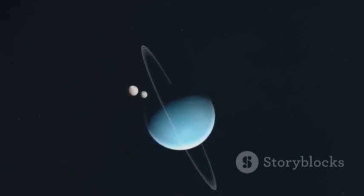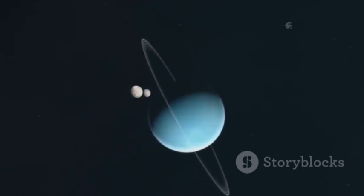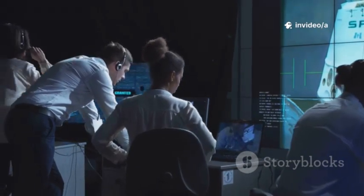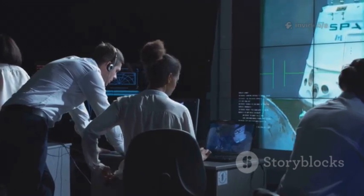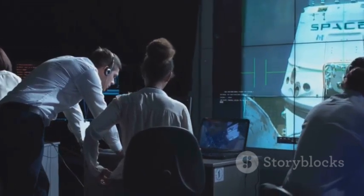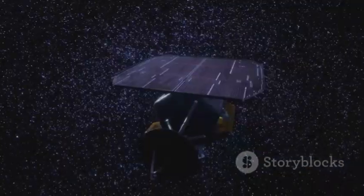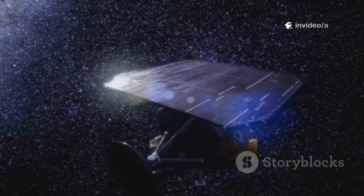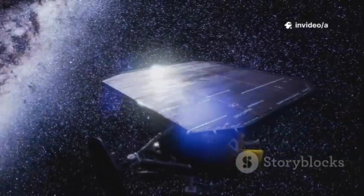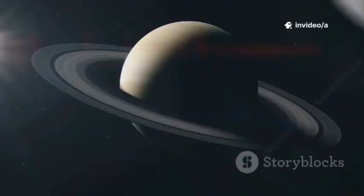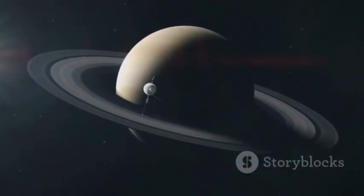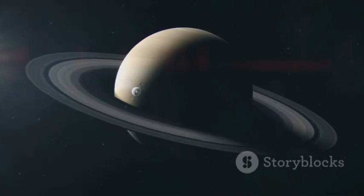Every signal it sends is a whisper from the edge of the unknown, a message from the distant past. When we receive its faint signal we're not hearing the present, we're listening to an echo from yesterday, a time capsule of information sent across the void. Voyager 1 is a lonely pioneer carrying with it the Golden Record, a carefully crafted greeting card from Earth. This record holds music, images, and messages in dozens of languages, a hopeful introduction to any distant civilization that might one day discover it.